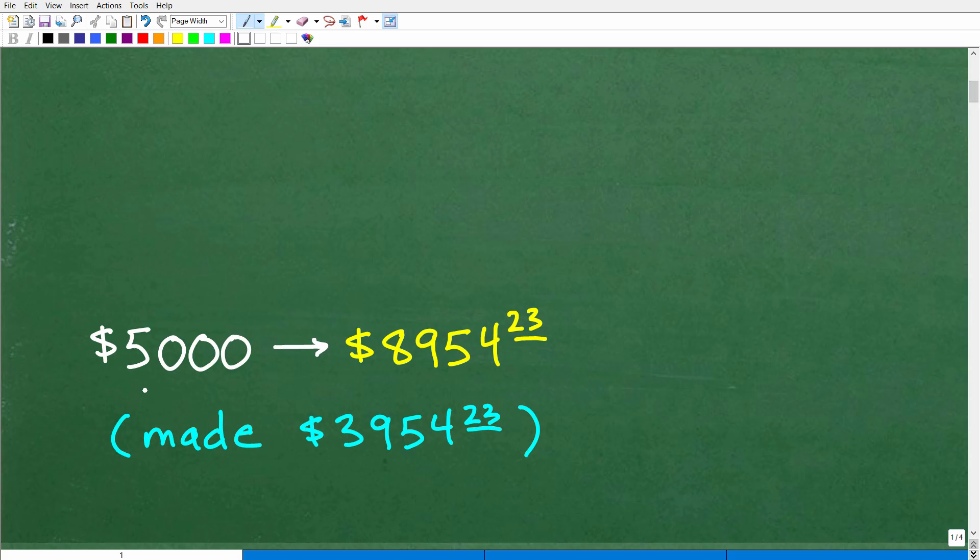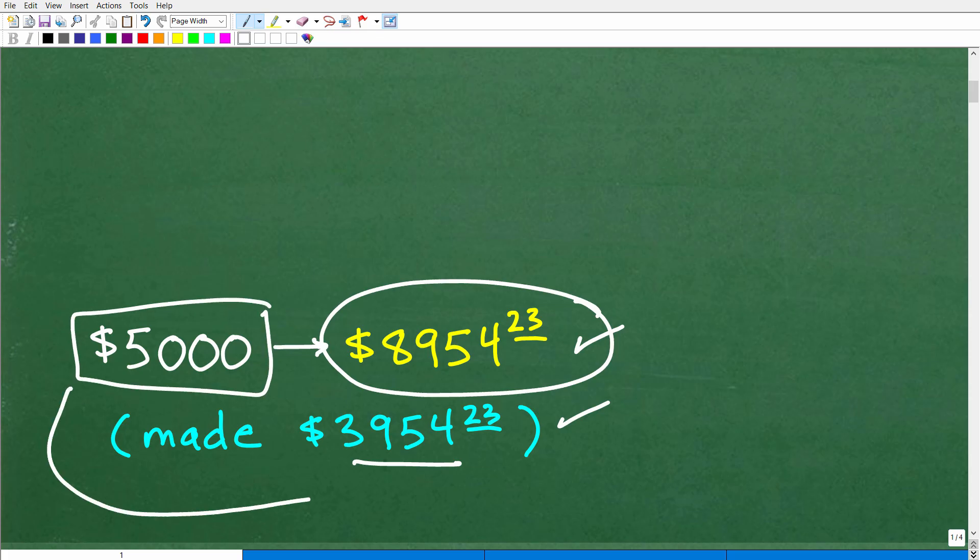Here is the answer. Our $5,000 grew into $8,954.23. So that means you've made $3,954.23. You've got to be careful on your answers. If you're saying, how much did you make? You made this amount. This is your total account balance. But remember, you started with your own money of $5,000.